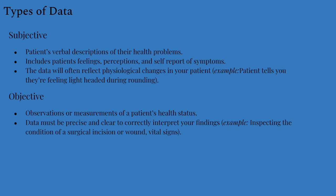There are two types of data that can be collected: subjective and objective. Subjective data is a patient's verbal description of their health problems — their feelings, perceptions, and self-report of symptoms, and it often reflects physiological responses. An example would be a patient telling you they're feeling lightheaded during rounds. Objective data, on the other hand, are observations or measurements of a patient's health status — such as inspecting a wound or taking blood pressure or temperature. Objective data must always be precise and clear.